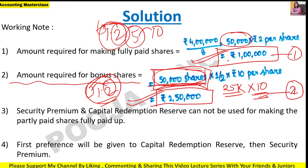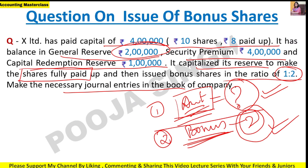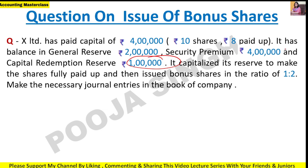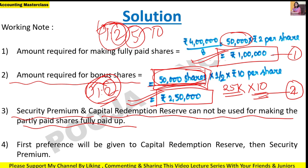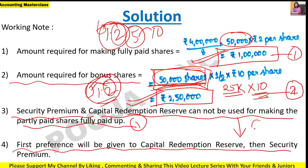Two important points to keep in mind: First, Security Premium and CRR accounts are NOT used for converting partially paid up to fully paid up. So CRR's 1 lakh and Security Premium's 4 lakh will not be used for that conversion. Second, when the company issues bonus shares, the sequence is important - CRR account is consumed first, then Security Premium account. Now let's start doing the journal entries.